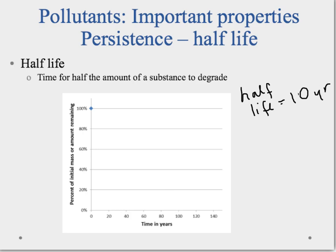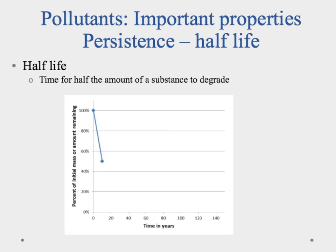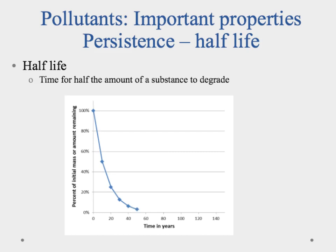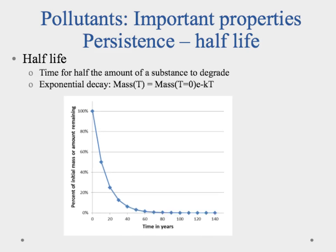So half-life is 10 years. After 10 years, if you start with 100%, you'll have 50% remaining. After another 10 years you've got 25%, and then about 12.5% — halving every 10-year period — never quite reaching zero. At the end here we're at about 0.1%. As you can see, it's a really nice, straightforward exponential decay figure.